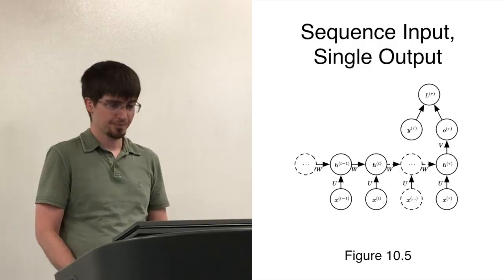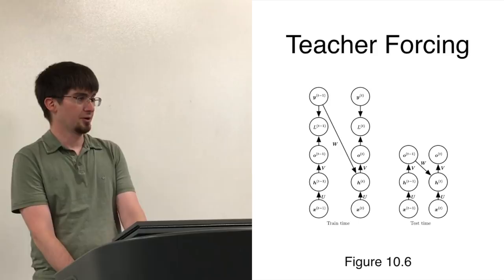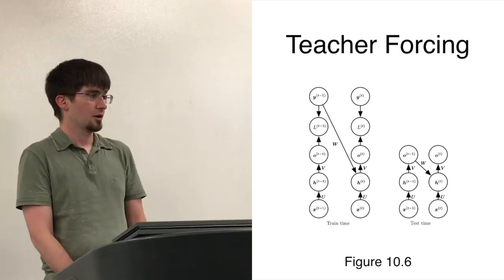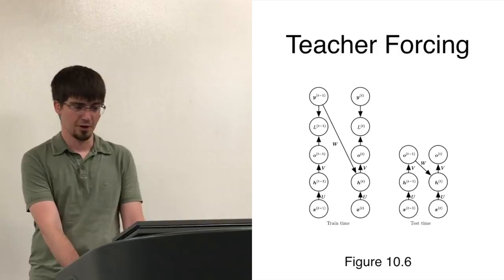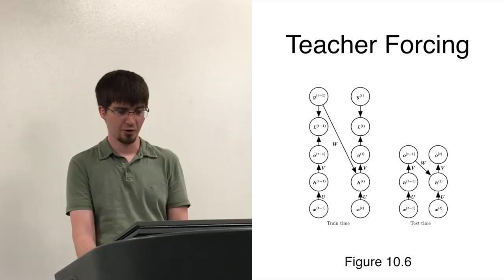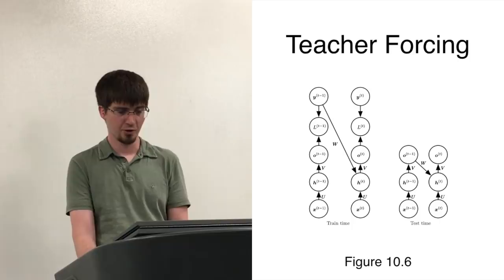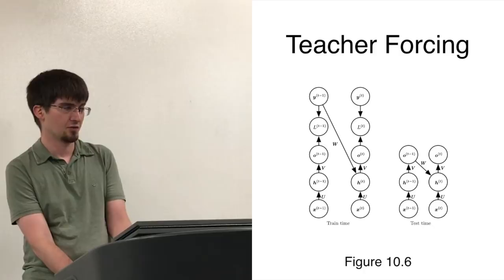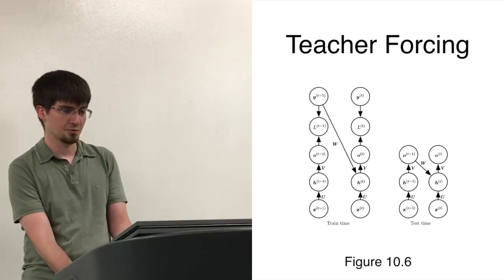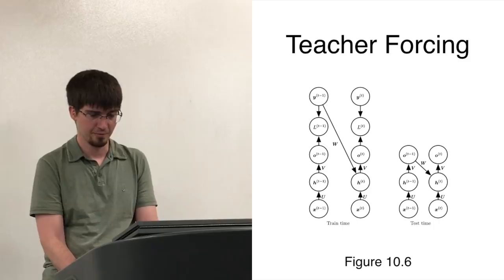The teacher forcing algorithm lets us train the version of the network where recurrence is only through the outputs. During training, we use the actual labels for the output from the training data as the input to each time step, instead of using the network's own output. When we want to get the influence of the previous time step on h, we look to the label y rather than the output o from the previous time step. Because y is fixed and doesn't change as a function of anything else — no arrows flow into it — the backpropagation algorithm stops when it reaches y. That means we can actually parallelize the model across all the different steps, making it much more efficient. At test time, we then feed the output from each time step into the hidden units for the next.